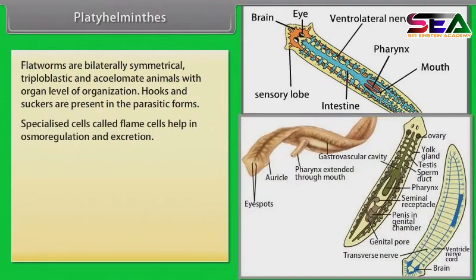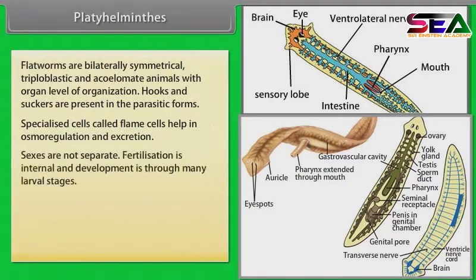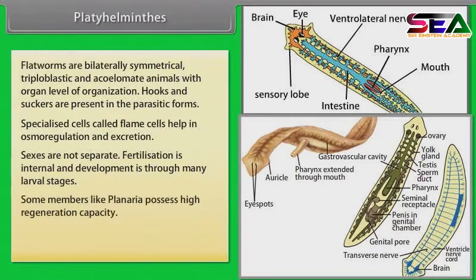Specialized cells called flame cells help in osmoregulation and excretion. Sexes are not separate. Fertilization is internal and development is through many larval stages. Some members like Planaria possess high regeneration capacity.